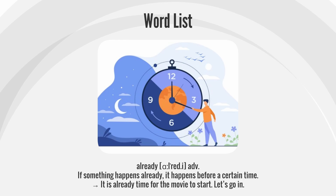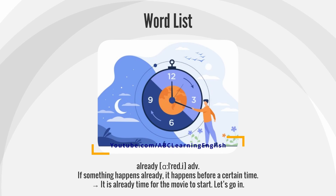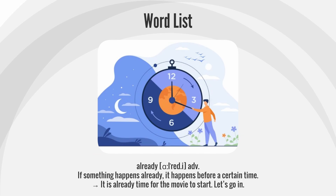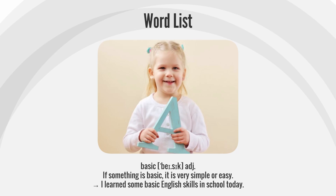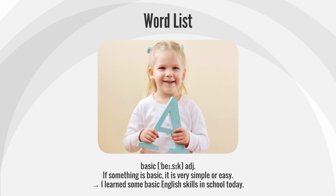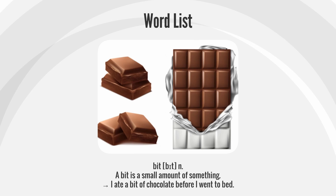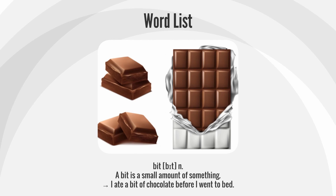Already: If something happens already, it happens before a certain time. It is already time for the movie to start. Let's go in. Basic: If something is basic, it is very simple or easy. I learned some basic English skills in school today. Bit: A bit is a small amount of something. I ate a bit of chocolate before I went to bed.